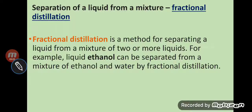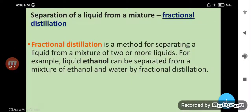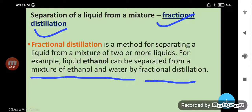Separation of liquid from a mixture means we have two miscible liquids. Suppose we have a mixture of alcohol and water — how do we separate it? By fractional distillation. Fractional distillation is a method of separating liquids from a mixture of two or more liquids. For example, ethanol can be separated from a mixture of ethanol and water by fractional distillation, because ethanol is soluble in water and forms a homogeneous mixture.